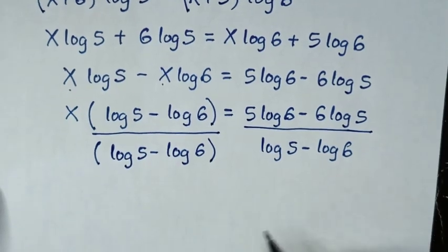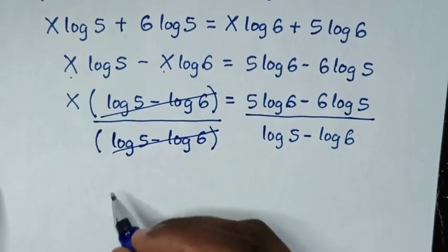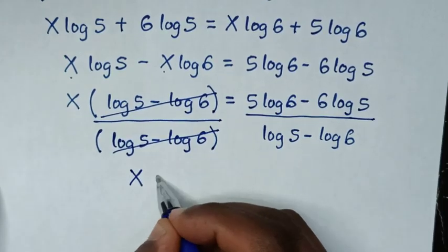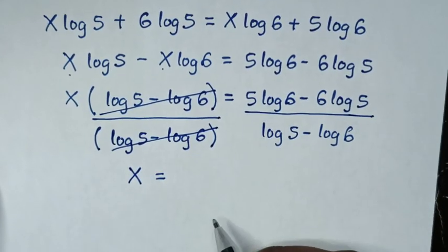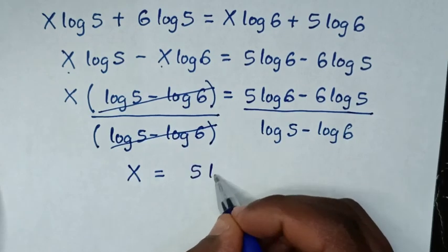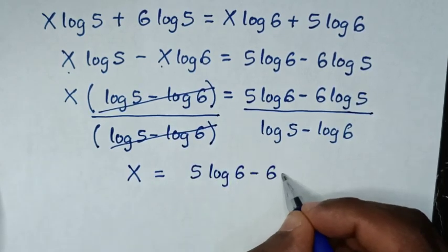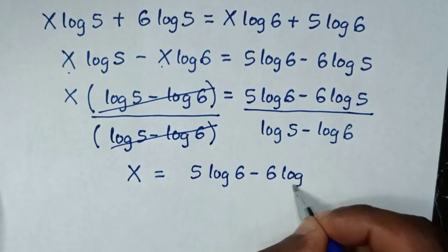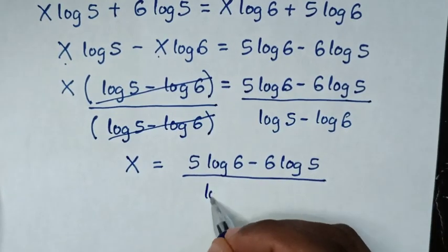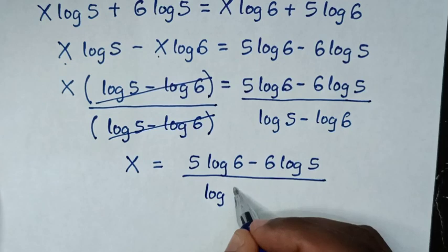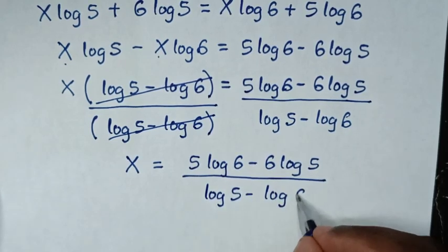So to simplify, this and this will cancel, so it will be x is equal to 5 log of 6 minus 6 log of 5, over log of 5 minus log of 6.